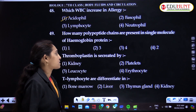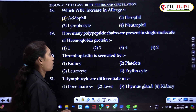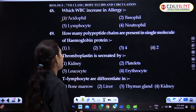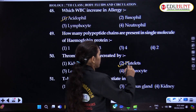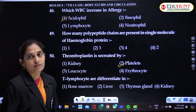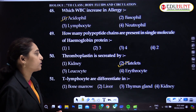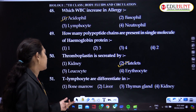Thromboplastin is secreted by platelets. Thromboplastin converts prothrombin into thrombin.